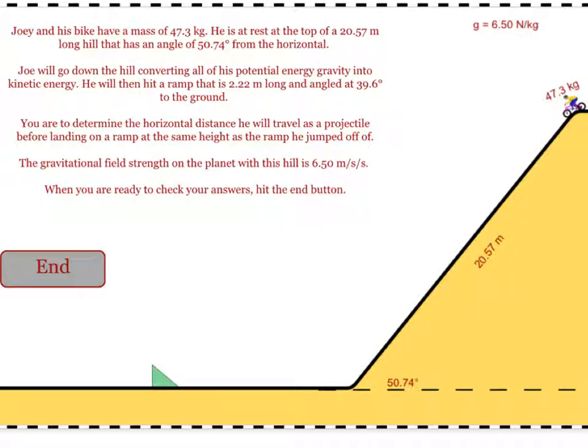Then you want to find his height when he goes off the ramp. And for this, you're going to use the information that tells you about the ramp. So it tells you the hypotenuse of the ramp, which is 2.22 meters, and it tells you the angle with respect to the horizontal. Find his height at the top of this ramp.